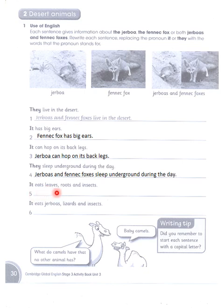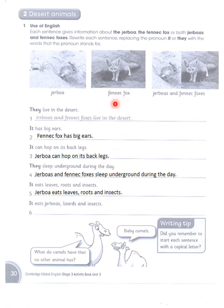It eats leaves, roots and insects. Which of these eats leaves, roots and insects? The fennec fox is very smart and eats Jarboas. So: Fennec fox eats Jarboas, lizards and insects. That is the writing key.